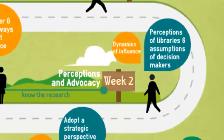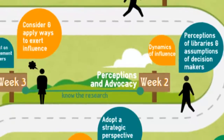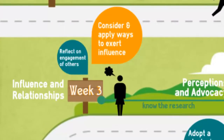Second, to know the key research relevant to our advocacy. This includes research on perceptions of libraries and librarians, research on the priorities and assumptions of decision makers, and research on the dynamics of influence. We're going to be looking at that in week two. Third, to consider and apply ways to exert influence. This is a key piece that we're going to be examining in week three.